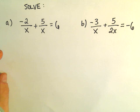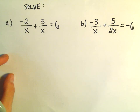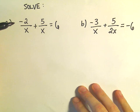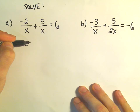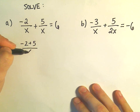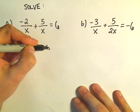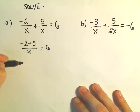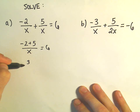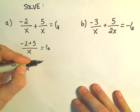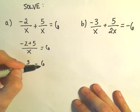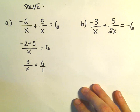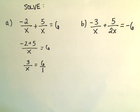In the first example we have negative 2 over x plus 5 over x equals 6. In this case, notice we already have a common denominator, so we can simply write it as a single fraction: negative 2 plus 5 over x equals 6. Simplifying the numerator, negative 2 plus 5 is 3, so we have 3 over x equals 6. You could just multiply both sides by x, but to illustrate cross multiplication, think of 6 as 6 over 1.